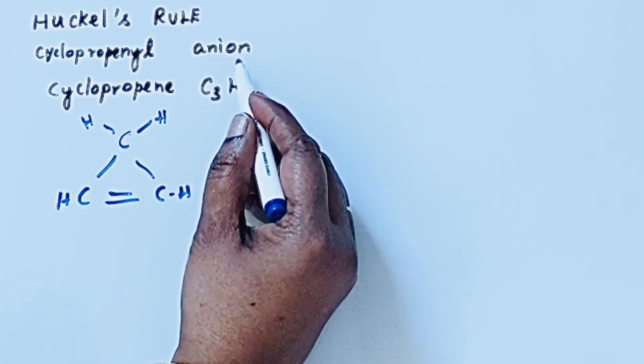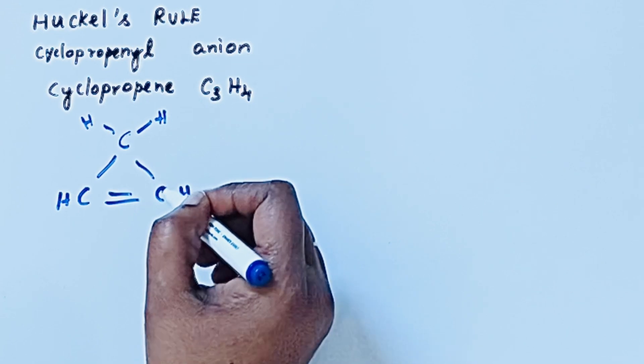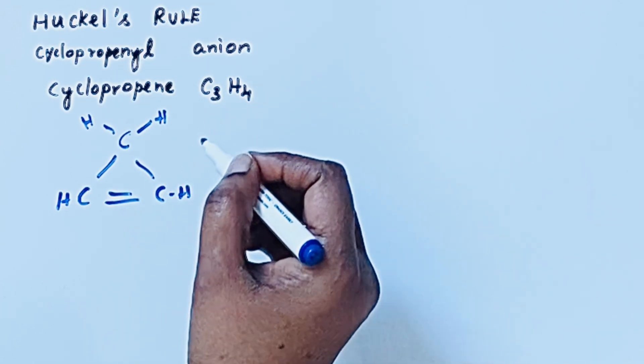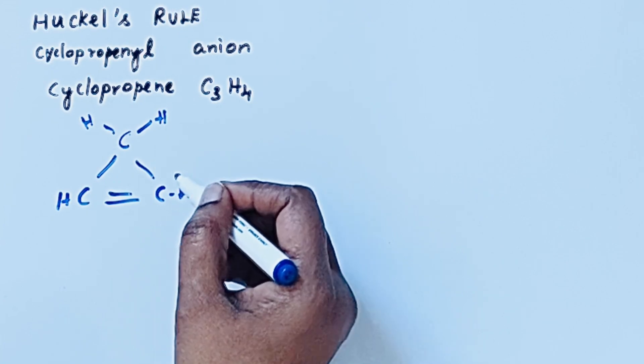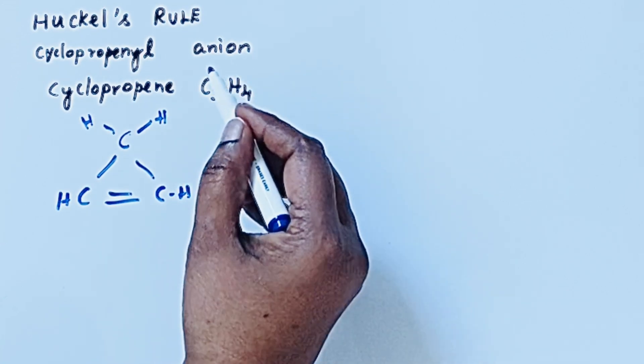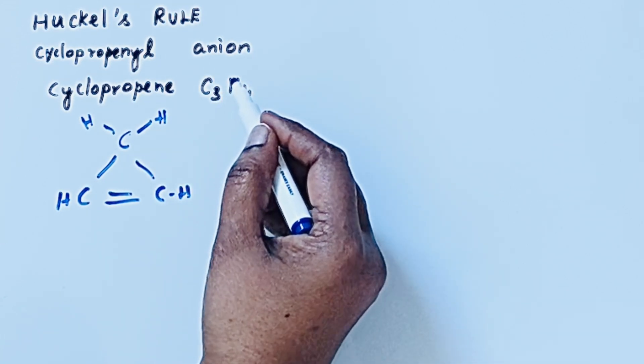So cyclopropenyl anion is formed from this cyclopropene. Ions are formed whenever a compound loses or gains electrons. Here anion is formed by gaining electrons.